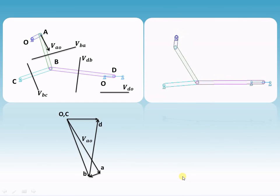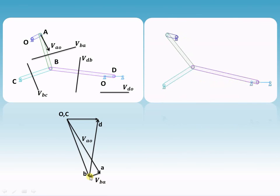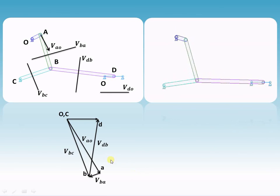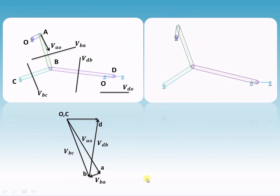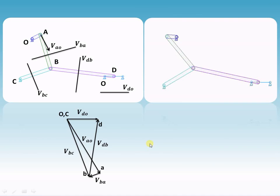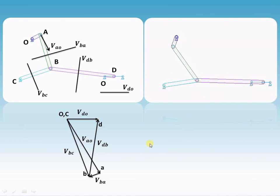So now you can see: velocity of B with respect to O — arrow towards B; velocity of B with respect to C — arrow towards B; velocity of D with respect to B — arrow towards D; and velocity of D with respect to O — arrow towards D. In this way you can draw the velocity diagram for complicated mechanisms.